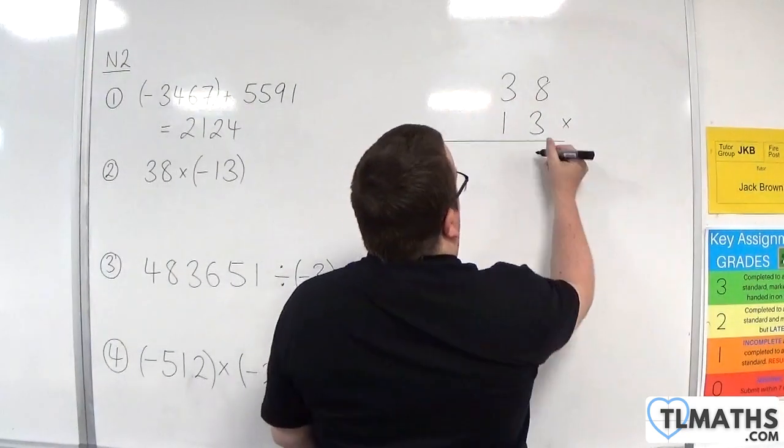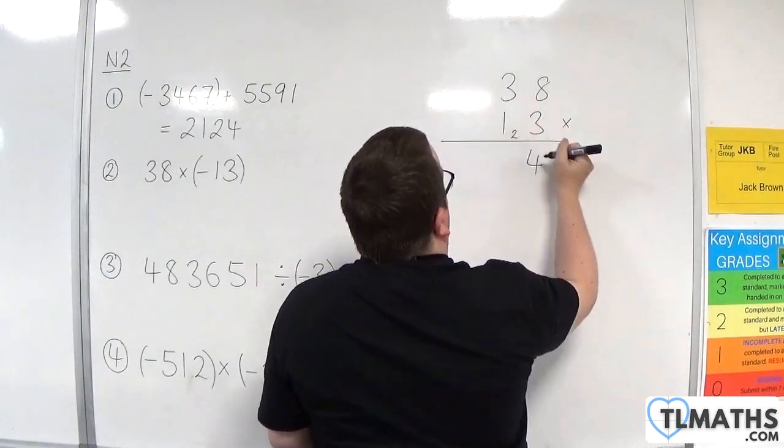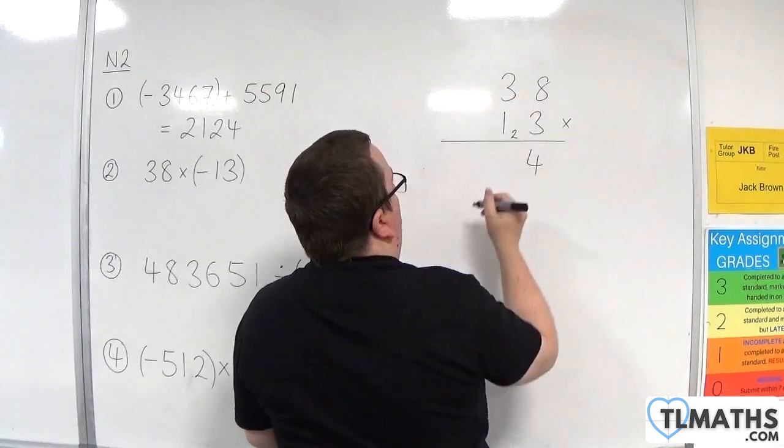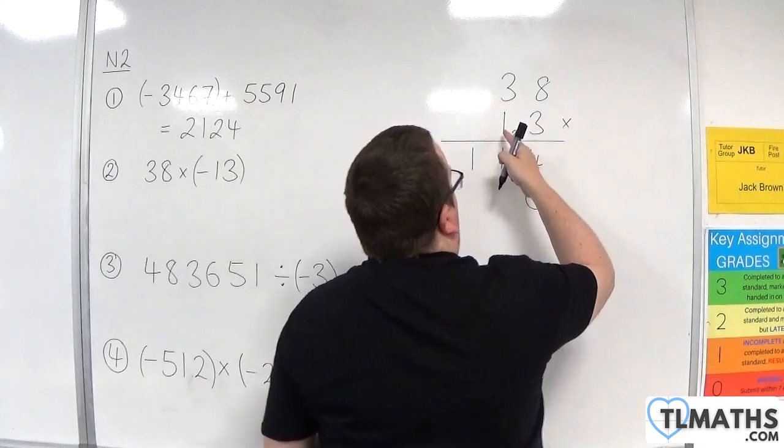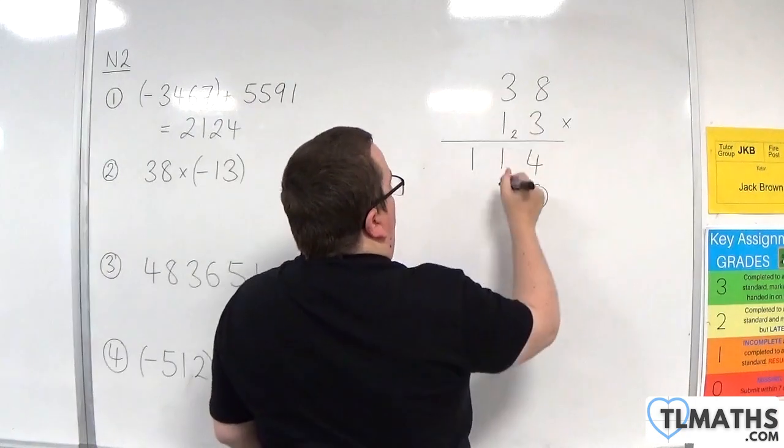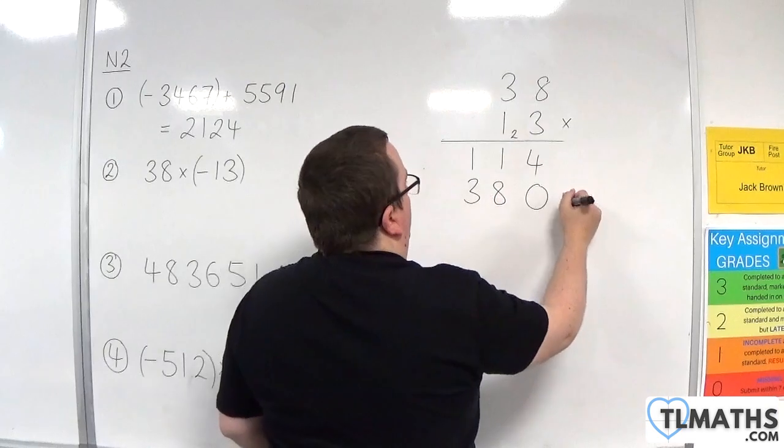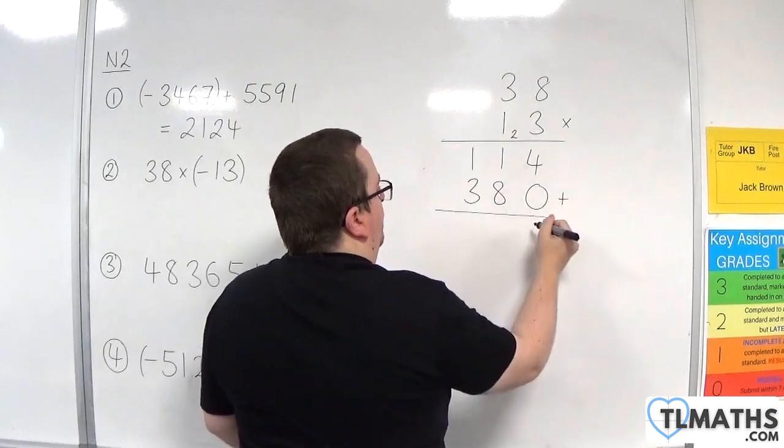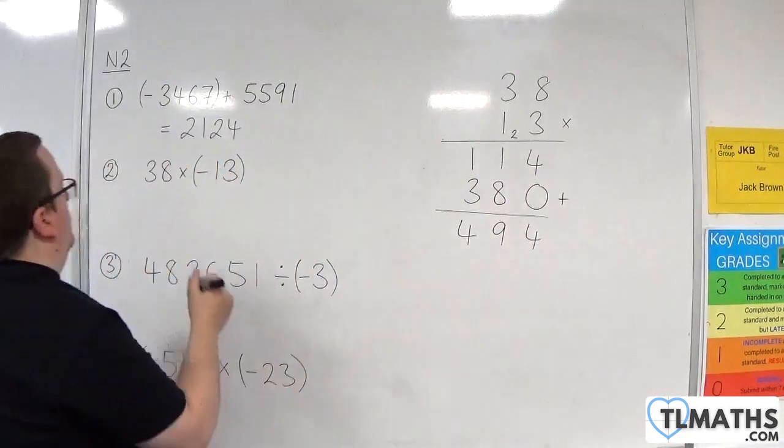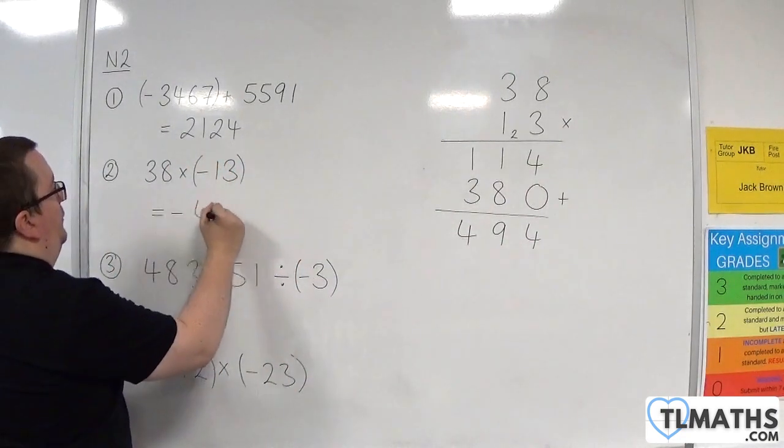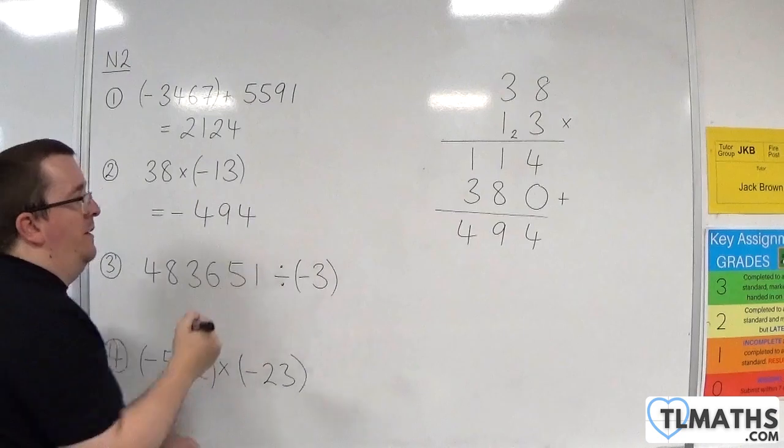3 times 8 is 24, so put down the 4, carry the 2. 3 times 3 is 9, add the 2 is 11. We bring in a 0 because now we're multiplying by 10. 1 times 8, 1 times 3. And we're going to add those two results together. 4, 9, 4. So our answer is minus 494.